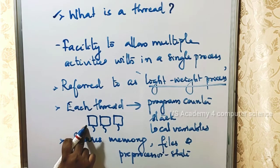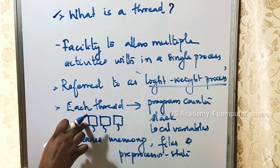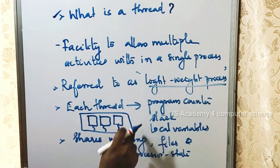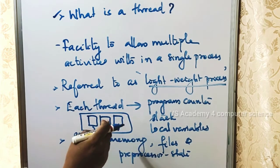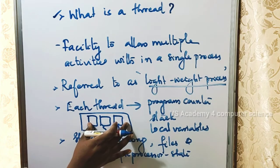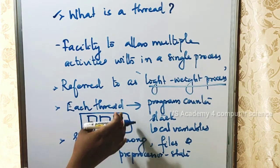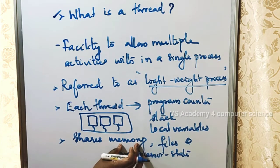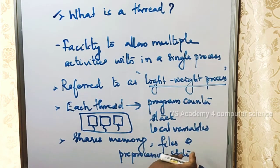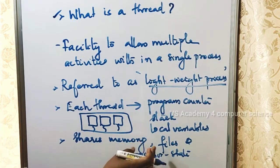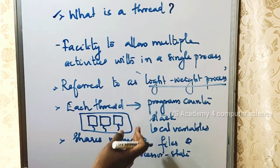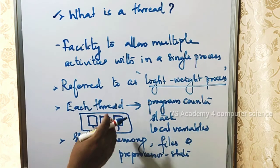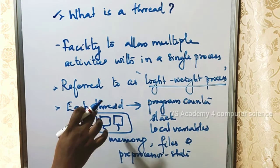Each thread has a program counter, stack, and local variables for its processing. Threads within a single process share common memory. That is, common memory is shared between threads, but each thread has its own program counter, stack, and local variables.